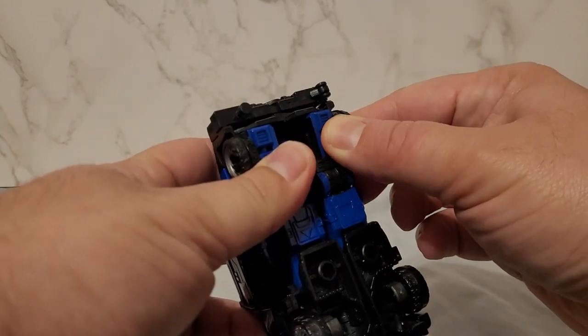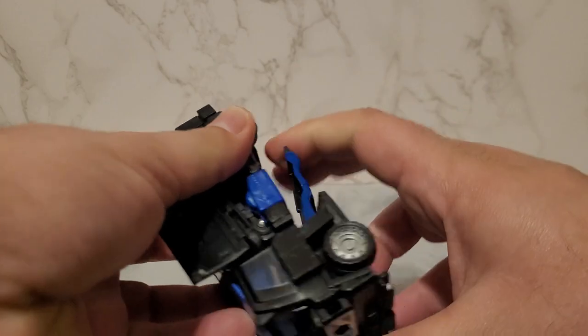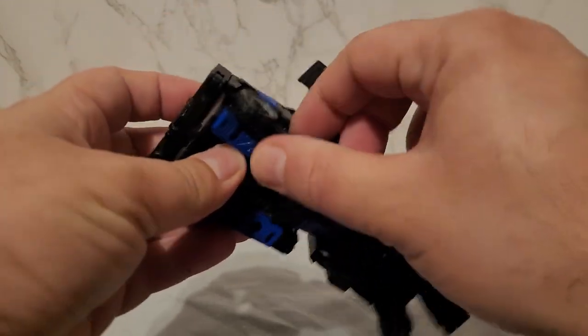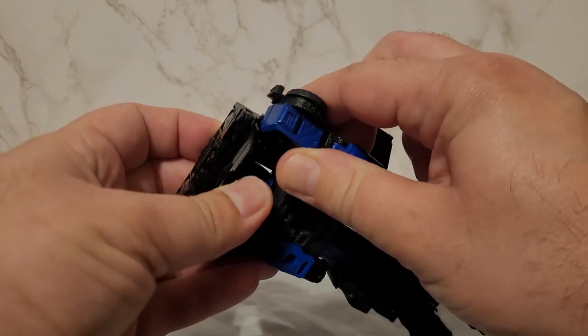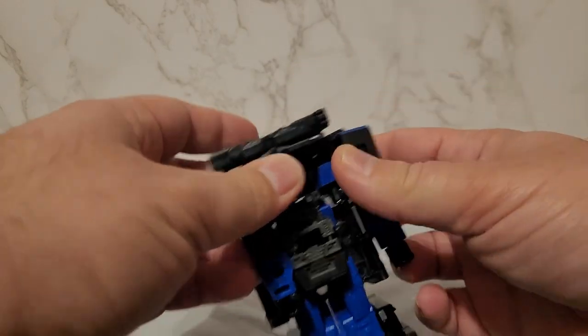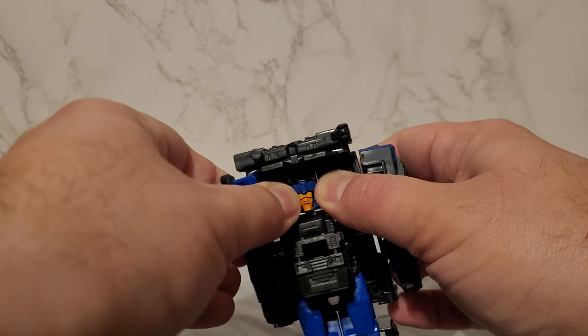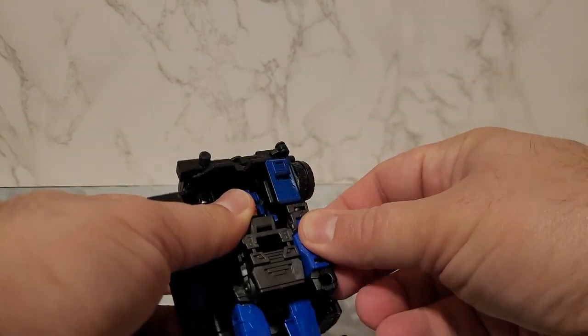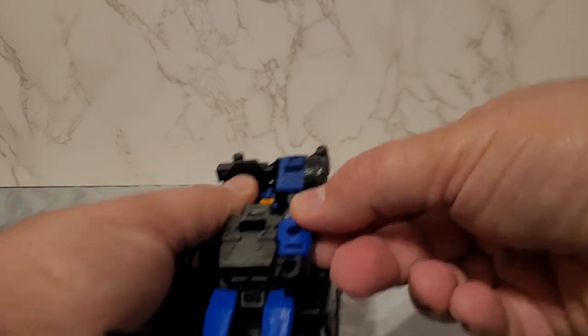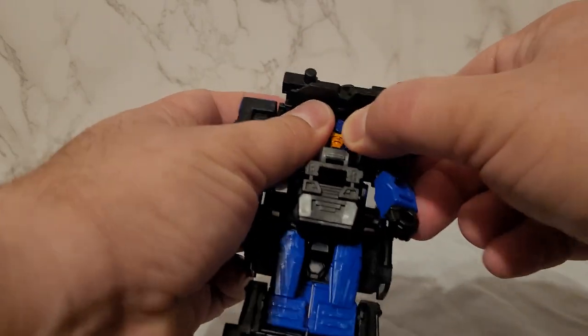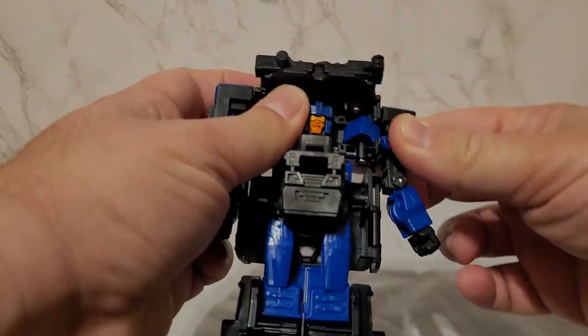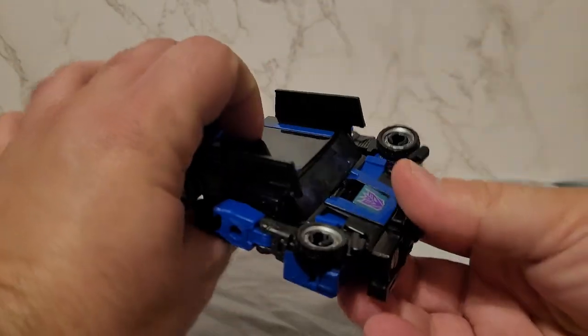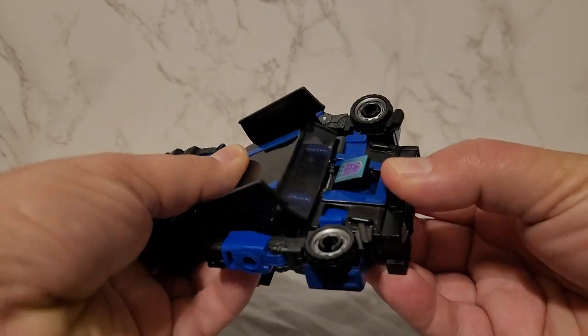Then you bring this assembly down like so. For the arms, you pull out like so. You lift this up and then bring it out. Make sure you feed the head through.